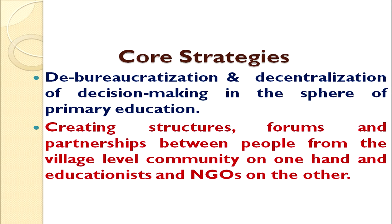We will now discuss the core strategies adopted in Lok Jumbesh project. The first core strategy was debureaucratization and decentralization of decision making in the sphere of primary education. This project laid much emphasis on decentralization of authority — the decision making was filtered to the grass root level so that the local people's say could be enhanced to the maximum level and they could share their experiences for providing education to children.